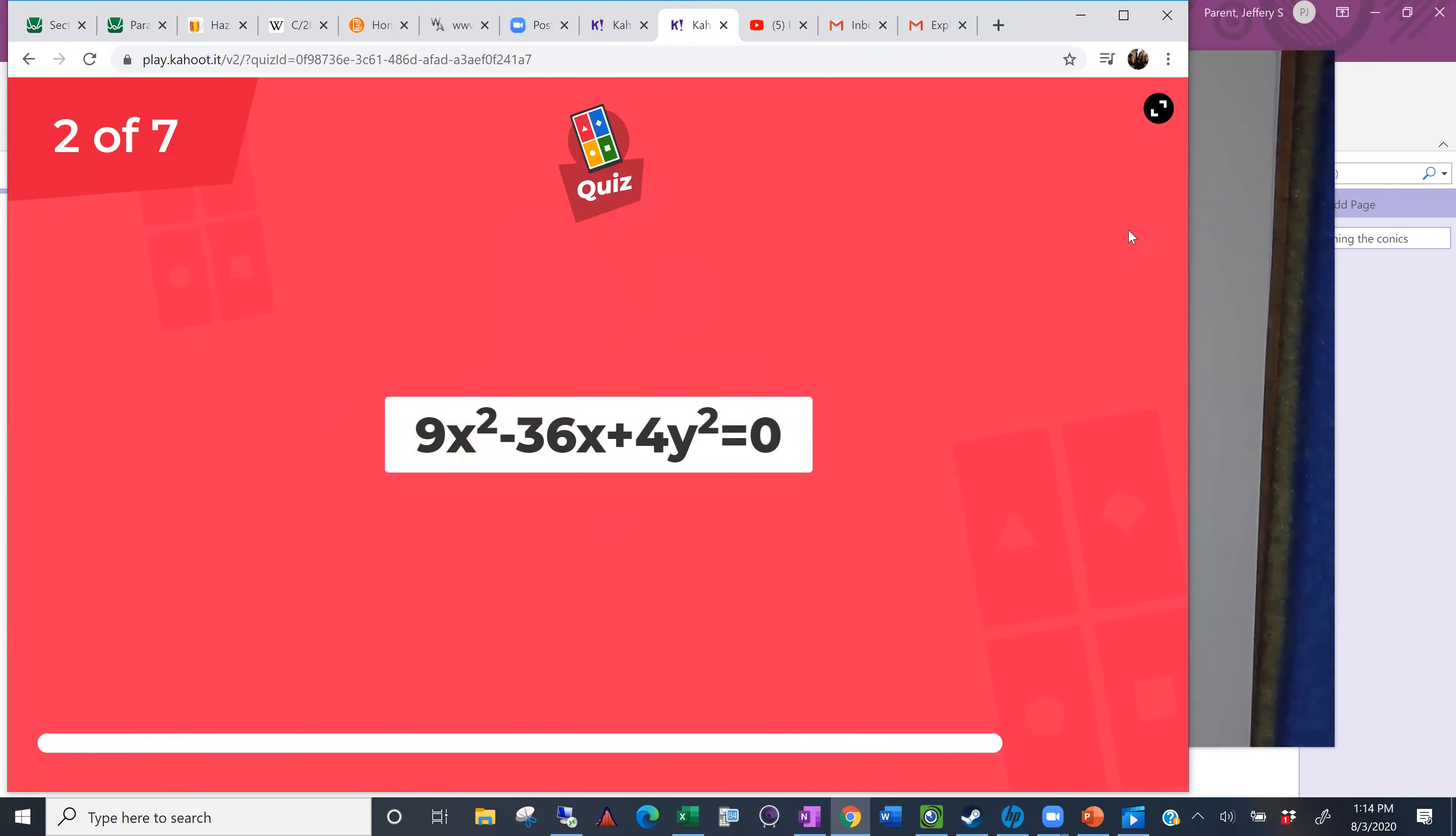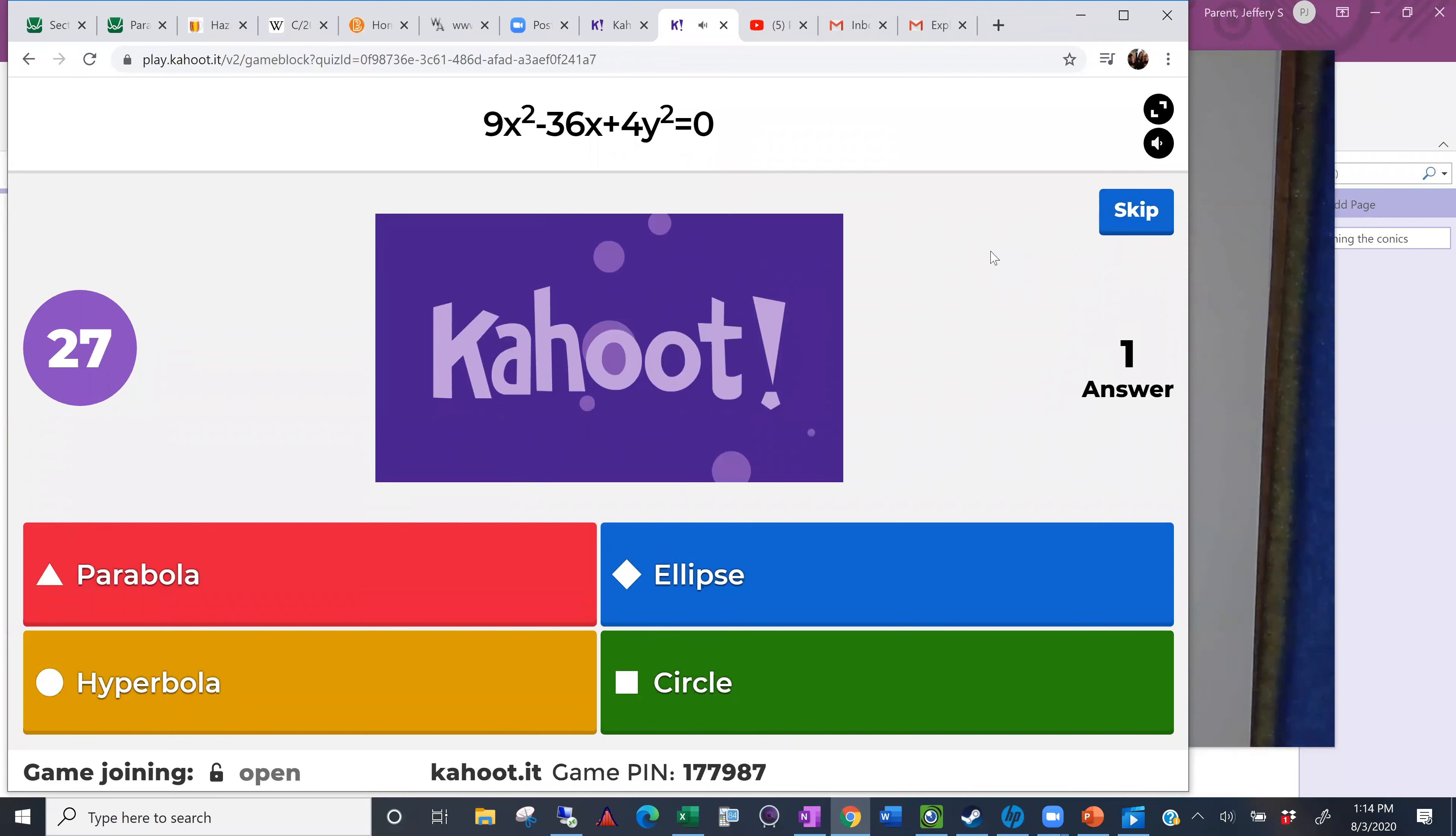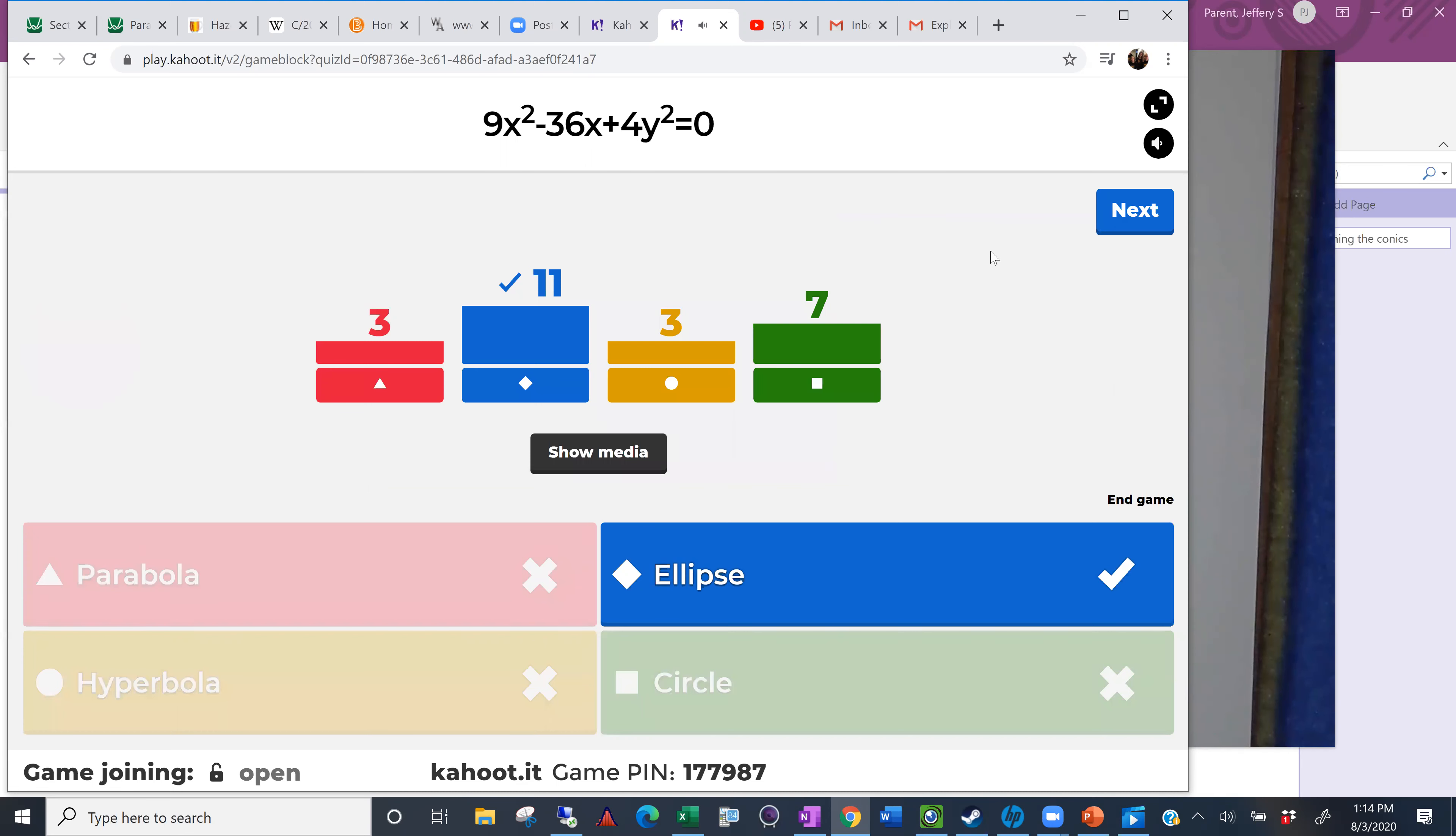We're going to do our little Kahoot here and see how you guys can do. We already did a little warm-up question, so the real one starts next. You only get one guess. You can't change it once you've entered it. The faster you enter, the more points you earn. Eight seconds. Get your answers in. Answer something.